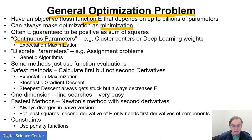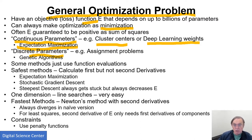We have continuous parameters, which are probably the most important. When we do deep learning weights, they're continuous. When we're doing cluster centers, we're clustering the continuous. Expectation maximization tends to deal with continuous parameters. An example of discrete parameters in the deep learning case is called hyperparameter choice. The number of layers in your network is a discrete parameter, and you have to optimize that often using genetic algorithms. The nature of genetic algorithms makes discrete choices — they change the genes and things like that representing the solution. Those changes are discrete, not continuous, and as such genetic algorithms are good for discrete problems.